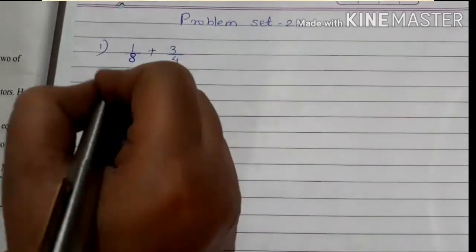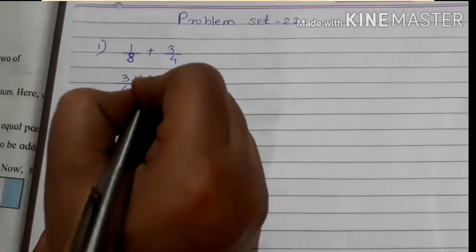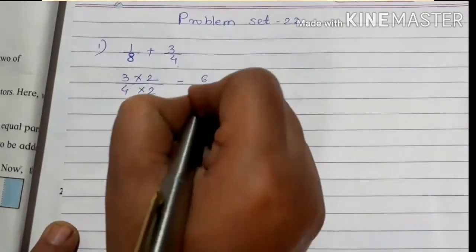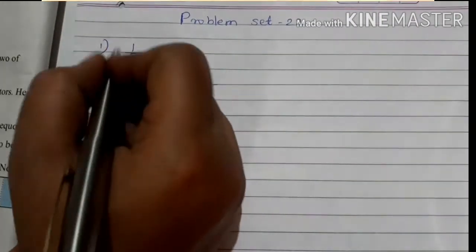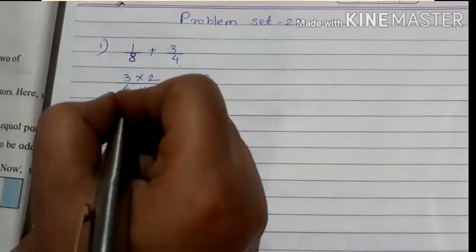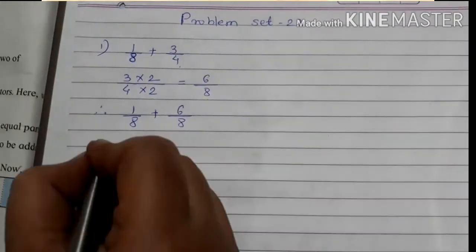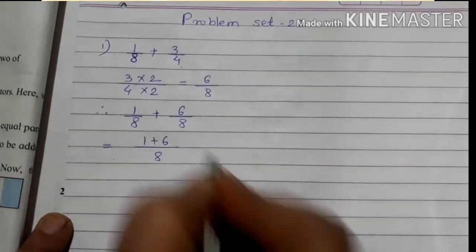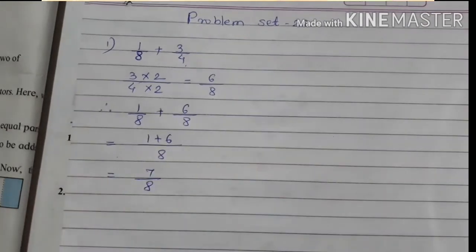So I am taking this fraction 3 upon 4 and multiplying both the numerator and denominator by 2. So 3 becomes 6 and 4 becomes 8. Now we get the denominator 8. Therefore 1 upon 8 as it is, plus 3 upon 4 becomes 6 upon 8. The denominators are now the same, so we write 8 once and add the numerators: 1 plus 6 is 7. The answer is 7 upon 8.